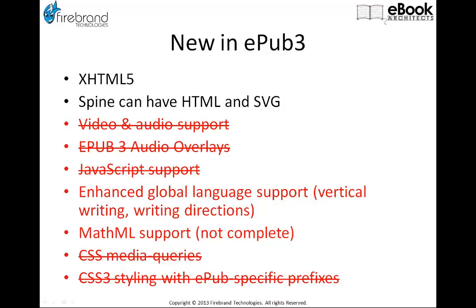XHTML 5 is a core feature of the EPUB spec, so that's not going anywhere, and having SVG inside the spine is supported across the board. But if you have an e-ink screen device, you're not going to have video and audio support. Audio overlays, JavaScript support, and even MathML don't have complete support — MathML support is not required to be present for a reading engine to be EPUB 3 compliant. This lack of consistent support across devices is very frustrating for those of us who build eBooks.